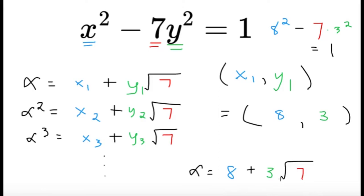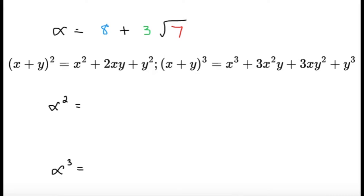Since we have alpha equals 8 plus 3 square root of 7, we're just going to get the first few powers. Since we have the given restriction for x and y both less than 200, that's the given condition. So, suppose we square alpha, we can use this property to square alpha. We're going to get x squared,